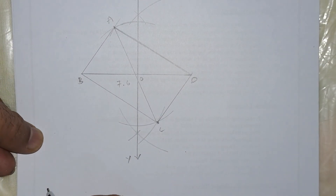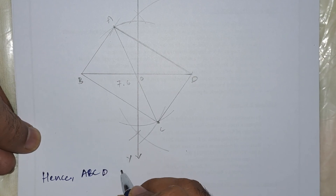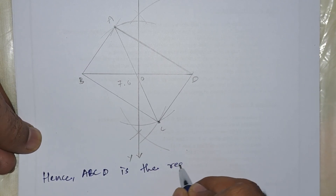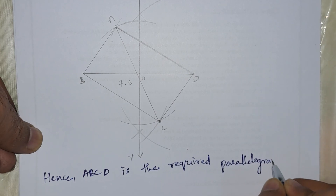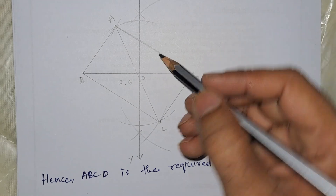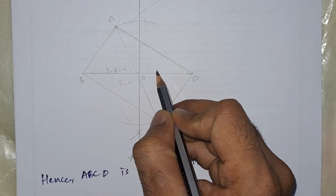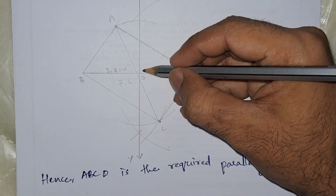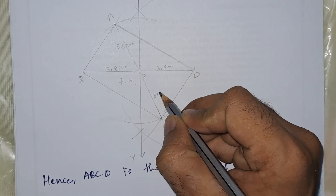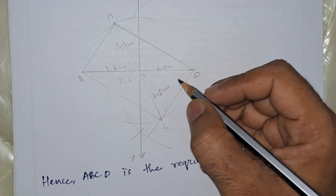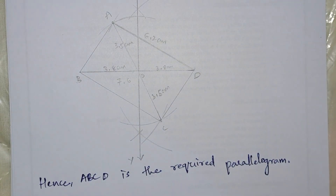Hence, ABCD is the required parallelogram. The diagonal BD is 7.6 centimeters, so each half measures 3.8 centimeters. The diagonal AC is 7 centimeters, so each half measures 3.5 centimeters. The side AB equals 6.2 centimeters and BC equals 6.2 centimeters.